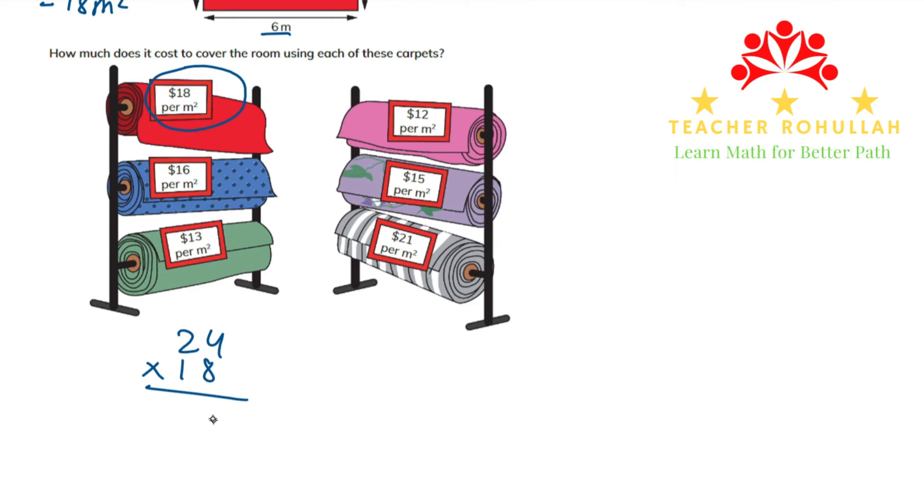Now 8 times 4 is 32, 3 right here. 8 times 2 is 16, 16 plus 3 is 19. 1 times 4 is 4 and 1 times 2 is 2. So 2 plus nothing is 2, 4 plus 9 is 13 and 1 we carry here. 1 plus 2 is 3 and 3 plus 1 is 4. So the price of the carpet which is $18 per square meter will be $432 for that room.